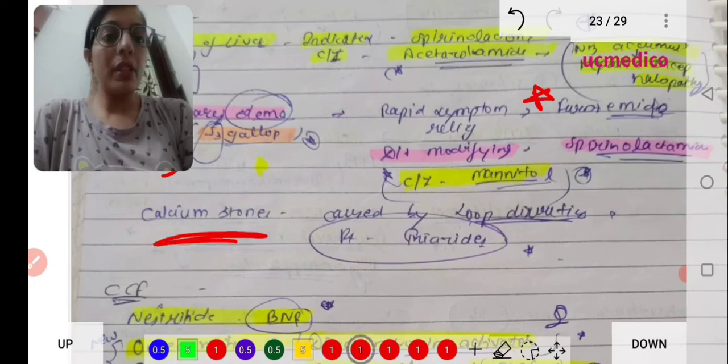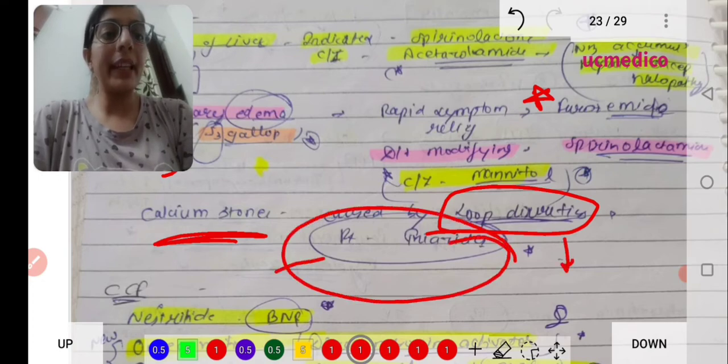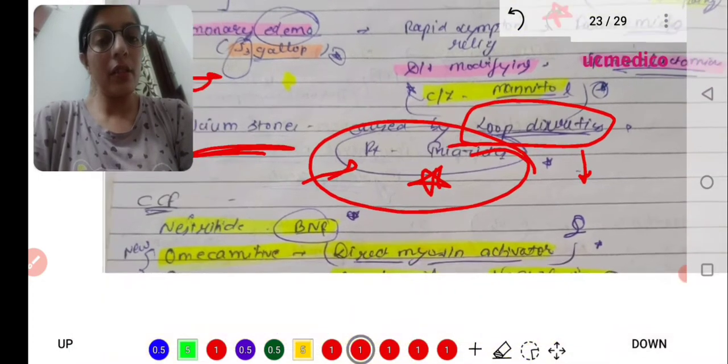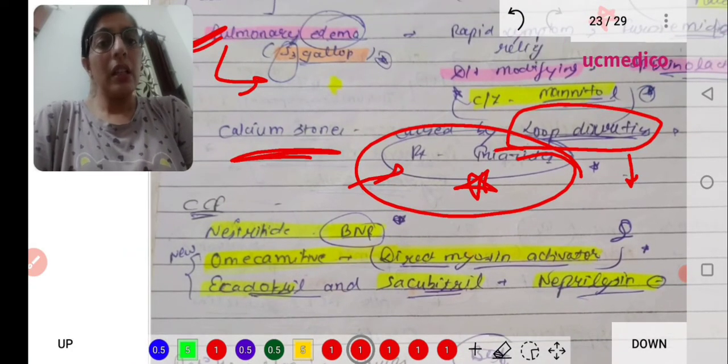Contraindicated is mannitol. Mannitol further increases the edema. Calcium stones are caused by loop diuretics, therefore we can give thiazides.